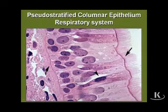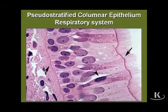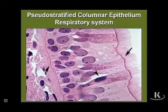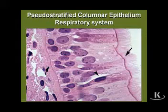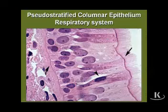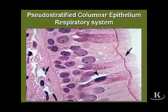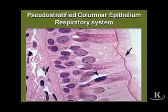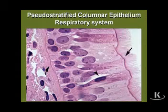The two cell types that do reach the luminal surface are goblet cells and ciliated columnar epithelial cells. The lightly stained areas are the columnar epithelial cells, and adjacent to them are examples of goblet cells or mucus-secreting cells. The cell surface specializations dominating this epithelium are true cilia, which are much taller than the brush border formed by microvilli in the simple columnar epithelium of the small intestine.